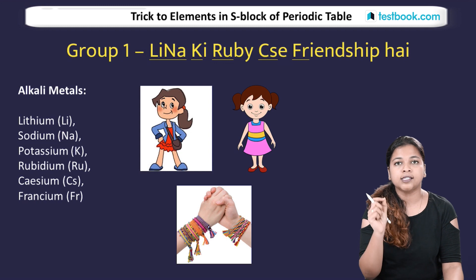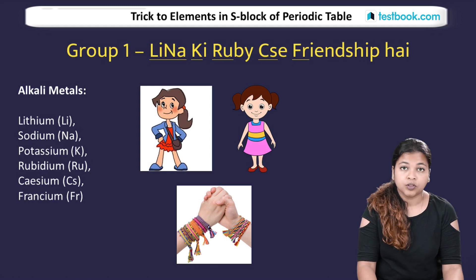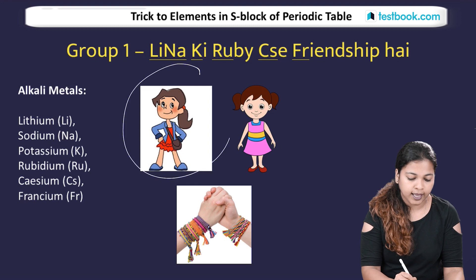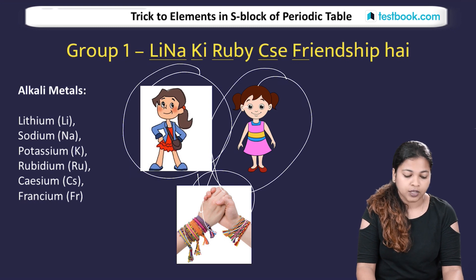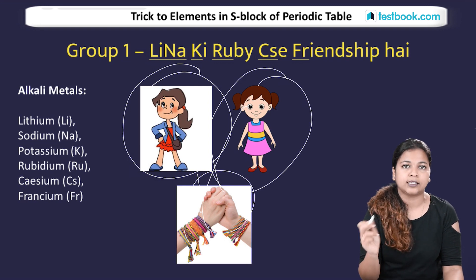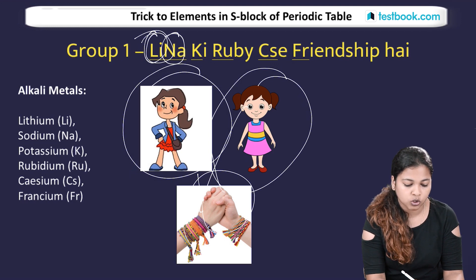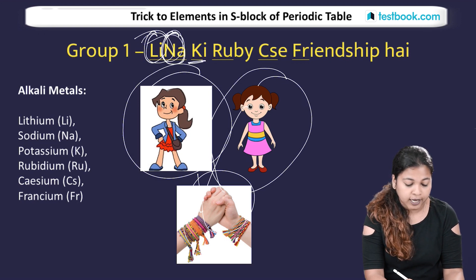Our first trick is for Group 1 metals — the Alkali metals. The mnemonic is: 'Lina's Ruby Friendship.' Here, 'Li' in Lina stands for Lithium, 'Na' stands for Sodium, and 'K' stands for Potassium.